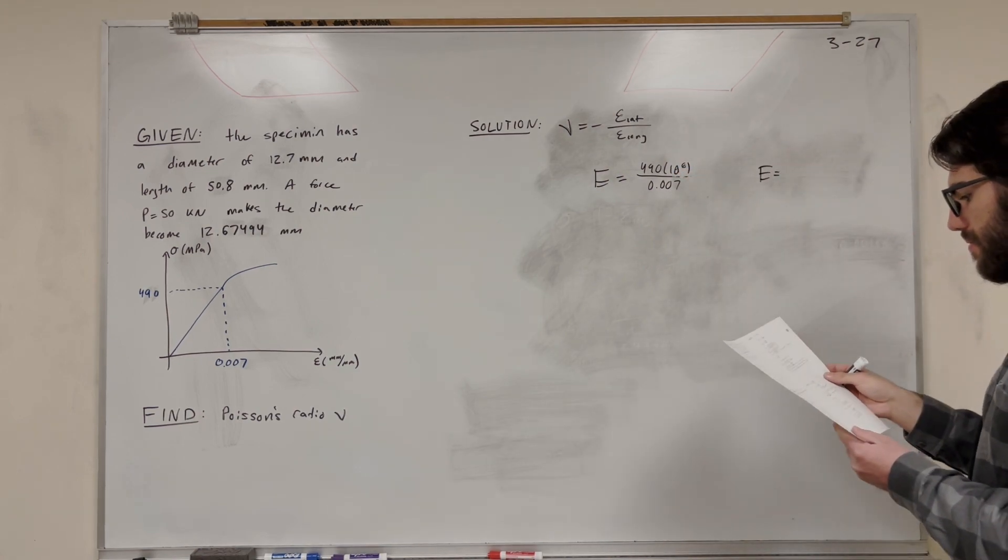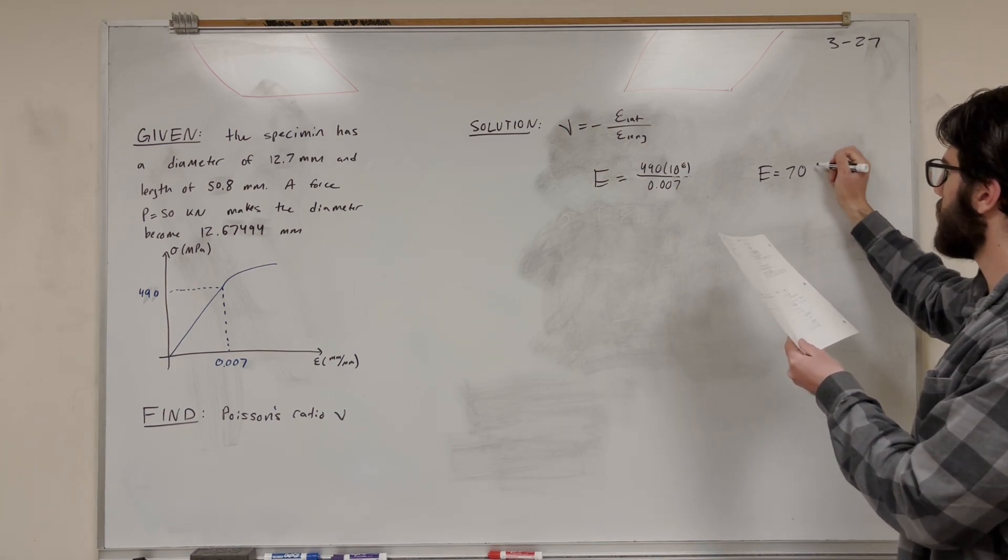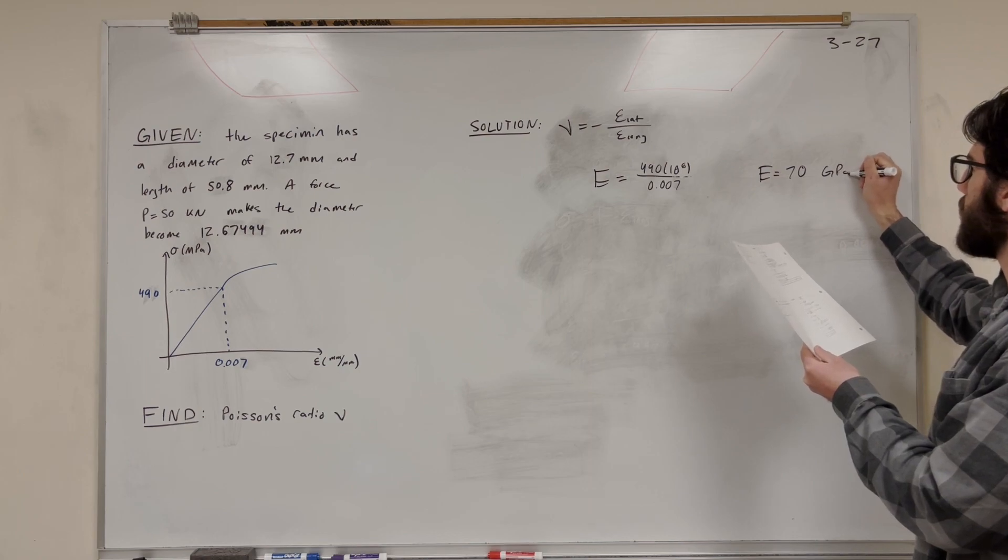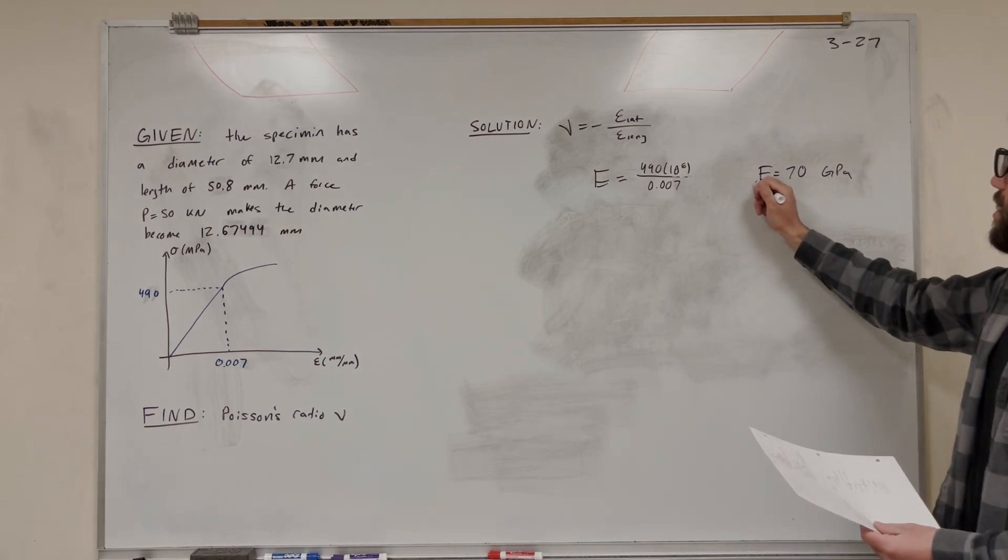With that, you're going to get that E is equal to 70,000 megapascals, or 70 gigapascals. So I'm just going to keep it at 70 gigapascals. There we go, we found that.